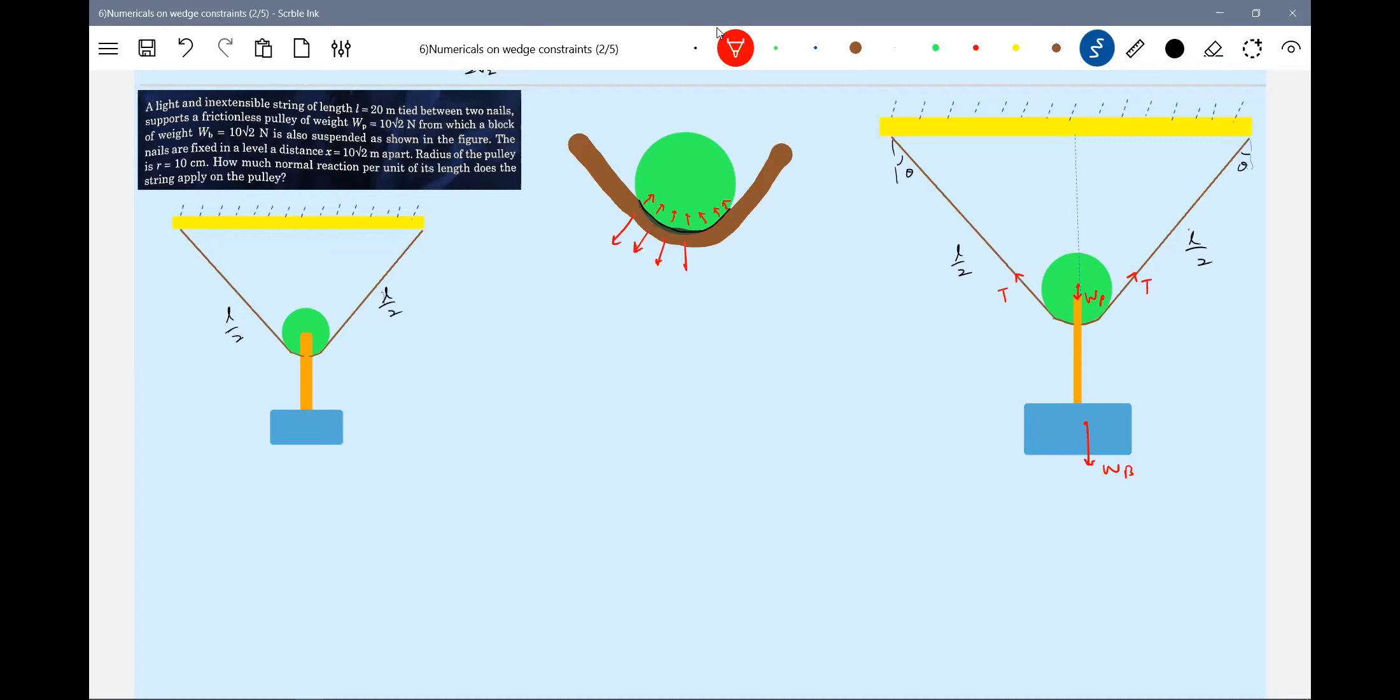If the idea strikes, okay; if it doesn't strike, you have to fight with it. Now look at these arrows - they are forces exerted by the string on the pulley. These arrows are forces exerted by the pulley on the string. This resultant will be internal only.